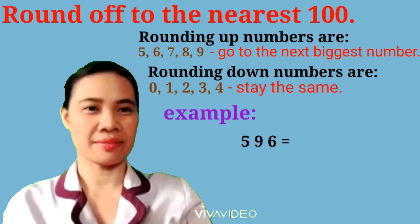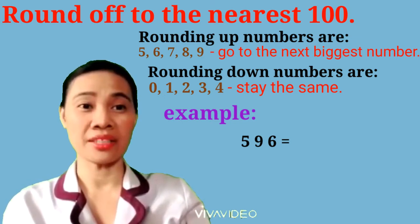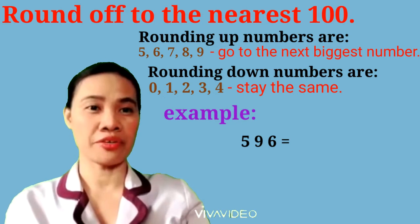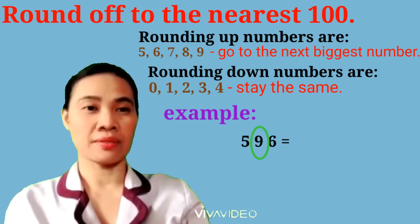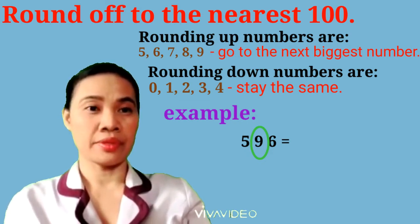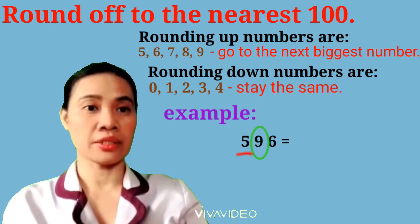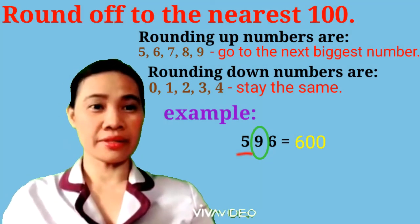For example, 596. 6 is in the ones place, 9 is in the tens place, and 5 is in the hundreds place. When you round off to the nearest 100, you should always look at the tens place. So 9 is in the tens place, and I know that 9 is a rounding up number. So you're going to add 1 to 5, and 5 becomes 6. Then 9 and 6 turn to 0 — it's going to be 600.